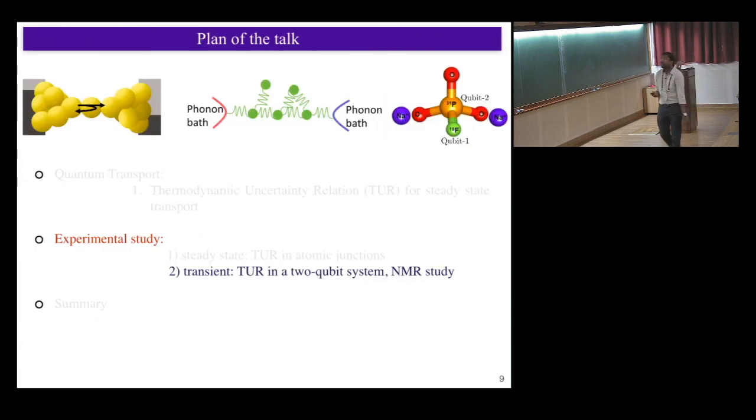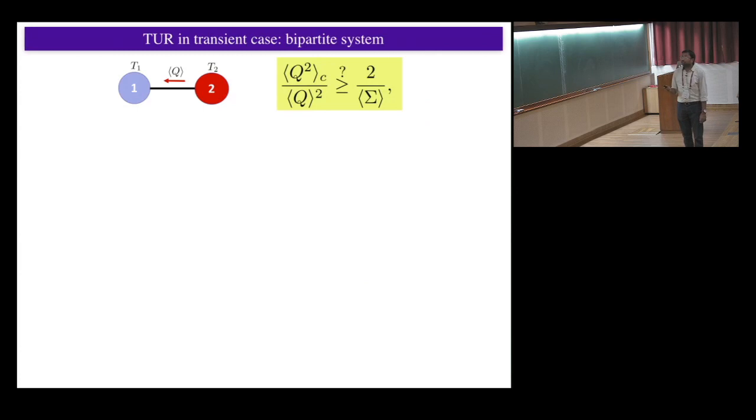What we recently did was to extend this relation for the transient case. Remember, what we did was steady state. For transient, you just have to change the relation a little bit, where instead of current, you now have to talk about integrated current. So this Q is like the heat. This is the fluctuation of heat, this is average heat squared. This is relative uncertainty getting bounded by two over the entropy production. Now it's not rate, but entropy production. So the question we're asking in the transient - imagine you have two systems at different temperatures, and you just couple them and look at heat exchange and their fluctuation. And the question is whether this relation is true or not.